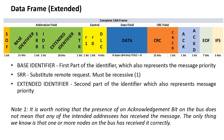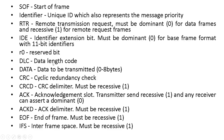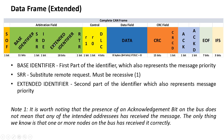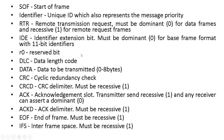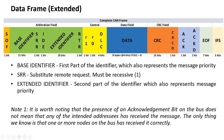Now the extended data frame. In this extended data frame we have 11 bits for the base identifier, then a Substitute Remote Request which must be recessive. After that we have the IDE bit — Identifier Extension — sent as recessive, making it a 29-bit identifier instead of 11-bit. Then we have the second part: the extended identifier of 18 bits. At the end we have the Remote Transmission Request, which must be dominant because it is a data frame. In the control field we have two reserved bits and the DLC. The data field is also a maximum of 8 bytes.